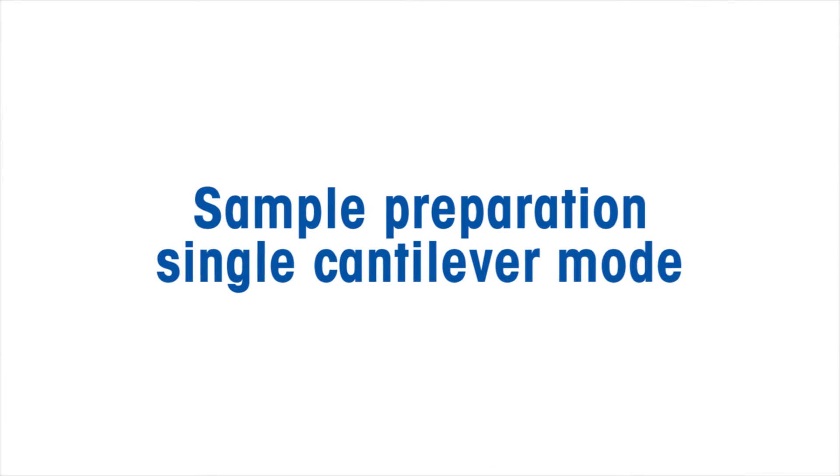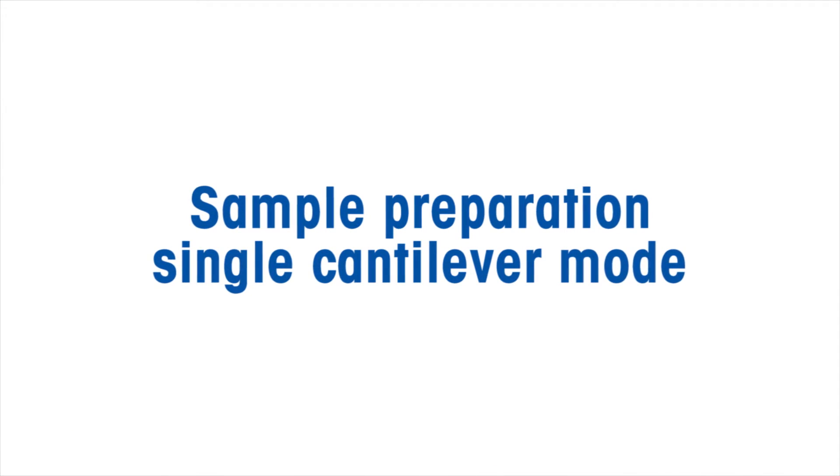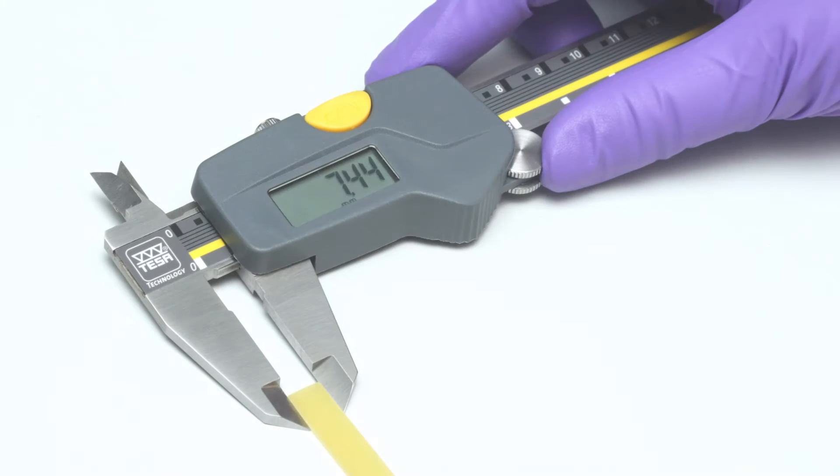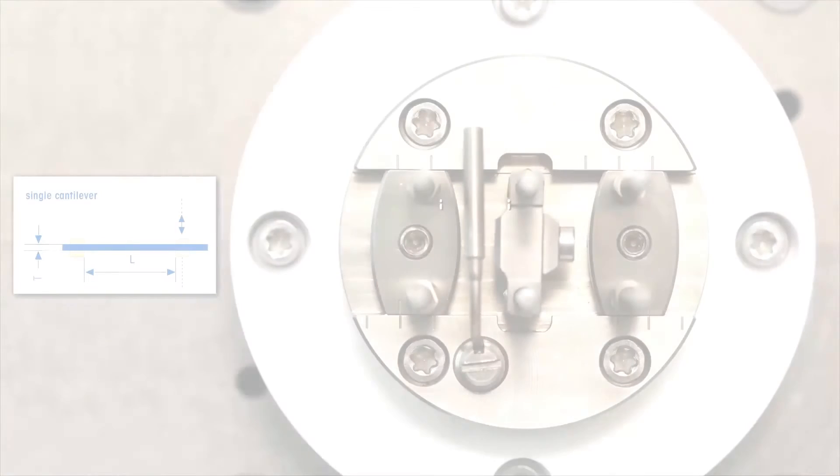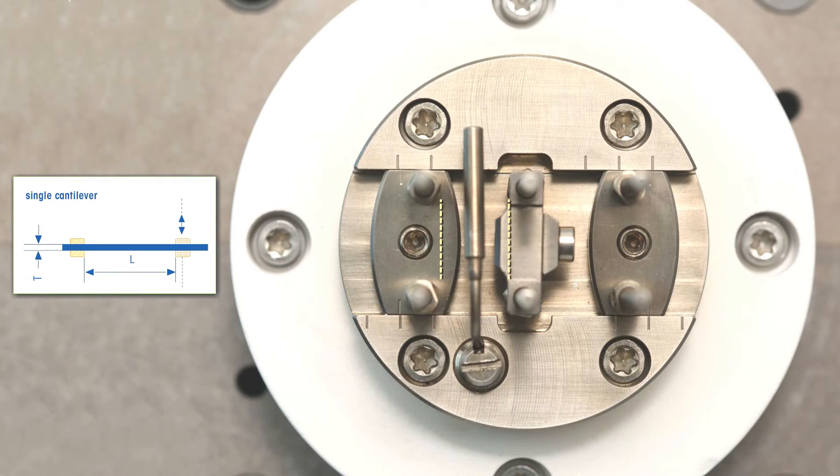Next, we will look at the sample preparation for single cantilever. First, we can measure the PCB sample width and thickness using the vernier calipers. The sample length is given by the distance of the inner to the outer clamp.